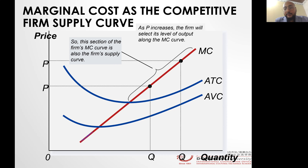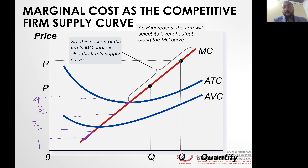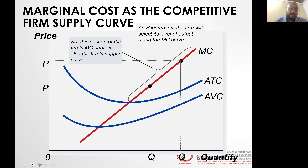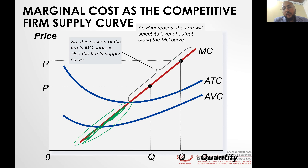If marginal cost is here and your average total cost is here, and the market price is at levels 1, 2, 3, 4 — if the market price is at 1, the firm will not supply any unit. Why? Because your average total cost is higher than the market price. You would say no, I don't want to even produce, because it's clearly a loss — the price cannot even meet my average total cost. So this shaded section does not fulfill the requirement of the supply curve.